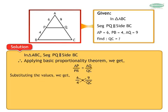By cross-multiplying, we get 6 into QC is equal to 9 into 4. Therefore, 6QC is equal to 36. Therefore, QC is equal to 36 upon 6.